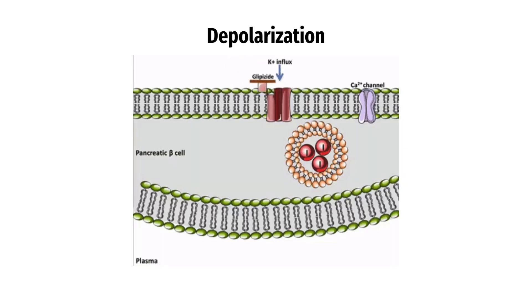When a neuron receives a signal from another neuron, either through chemical or electrical signals, it undergoes a process called depolarization.